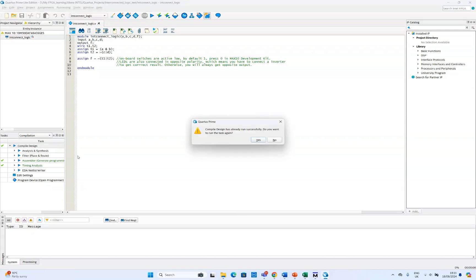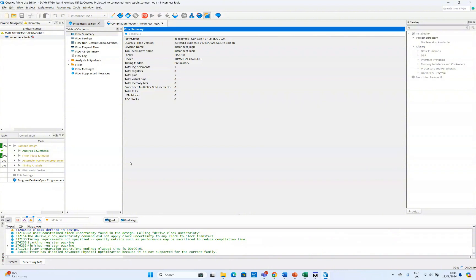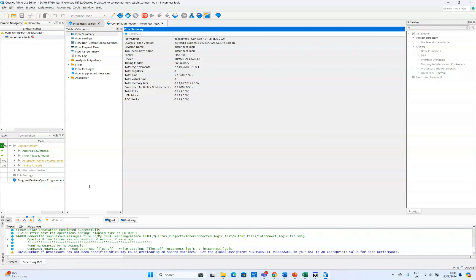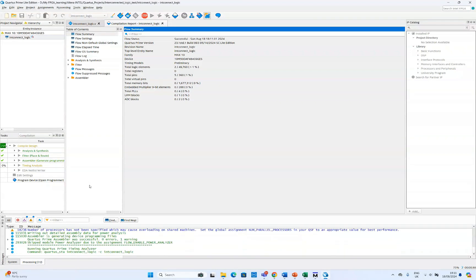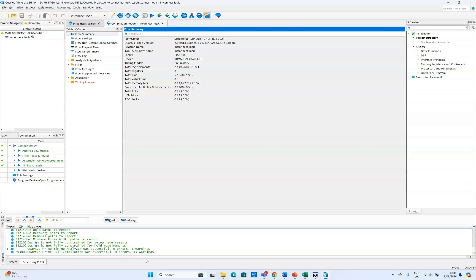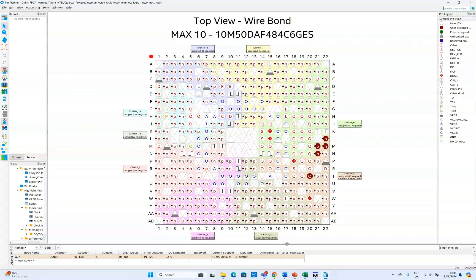So now we can compile this project. As we discussed in our previous video, it takes a bit of time to compile the project, so it's now compiling. So now the compile is done and there is no error. So we can also show you the pin assignments here. So if you go to pin planner you can see what pins we used here.